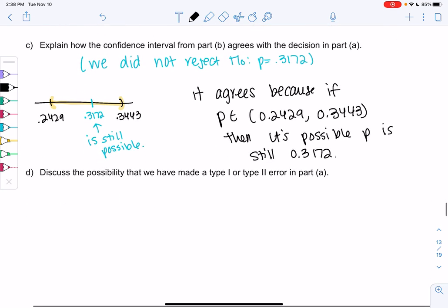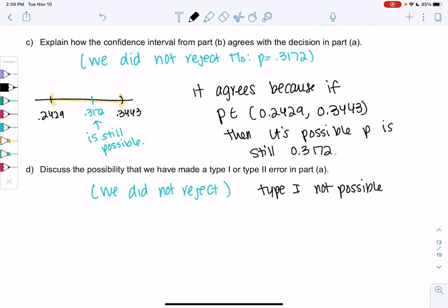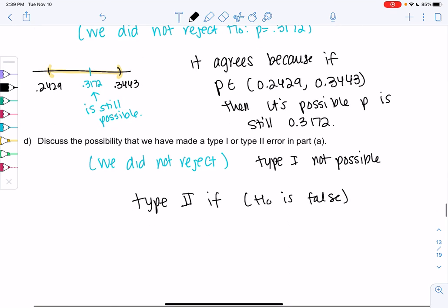And then let's talk about error. So again, we did not reject, so that'll be important with the type of errors we could have made. We did not reject, meaning type one is not possible. Type one is only if you reject. Type two would have happened if H0 was false.